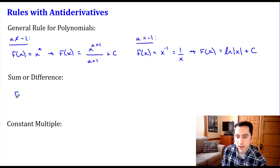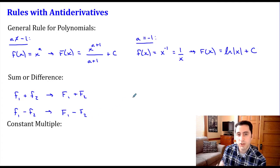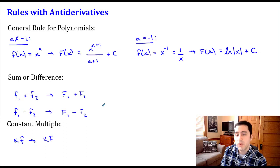The next two rules are pretty simple. For the sum or difference rule: if I have two functions f1 and f2 being added or subtracted, I can find the antiderivative of each term individually. Similarly, if a function is multiplied by a constant k, I can just find the antiderivative of f and the constant k stays out front, just like with regular derivatives.